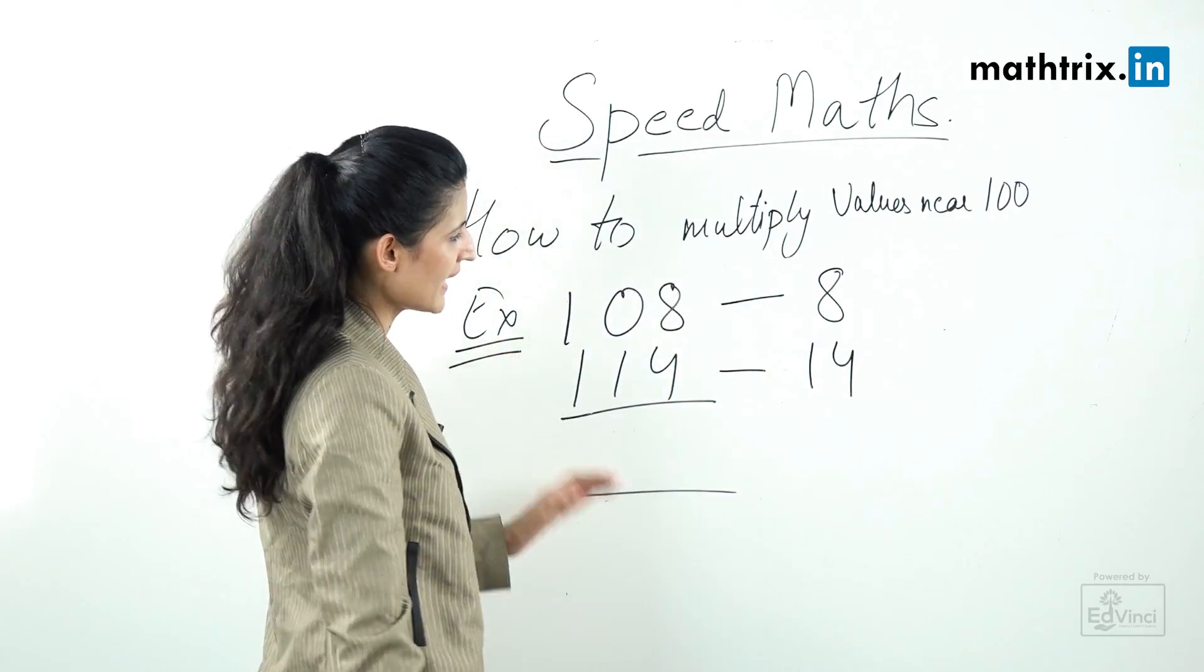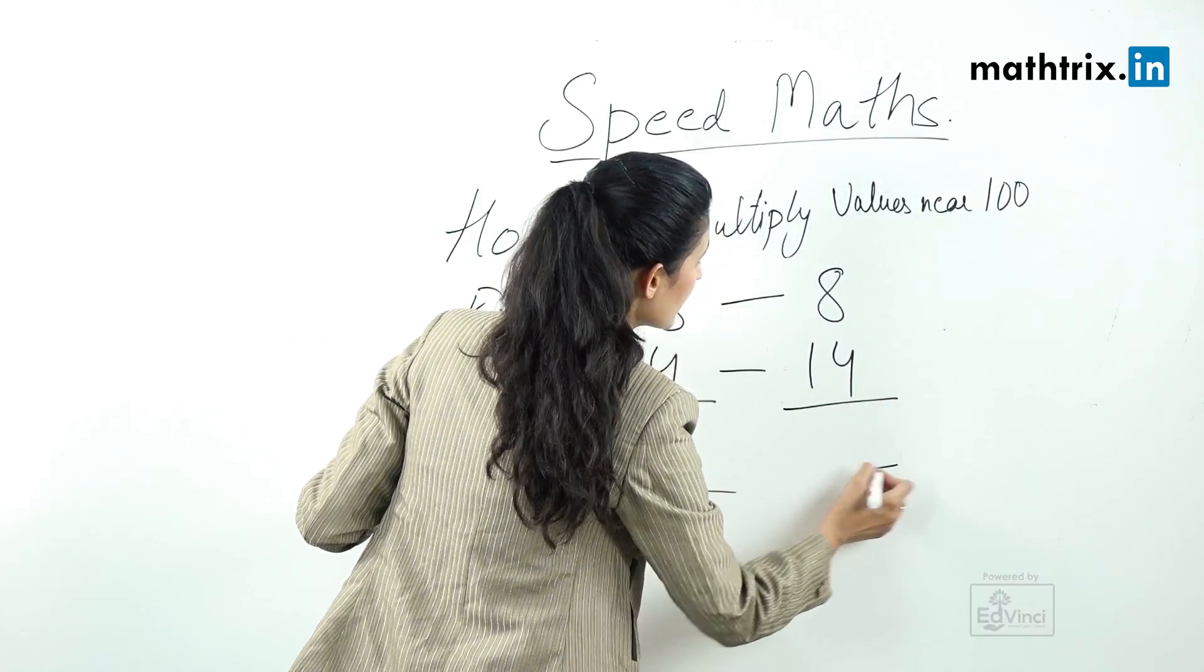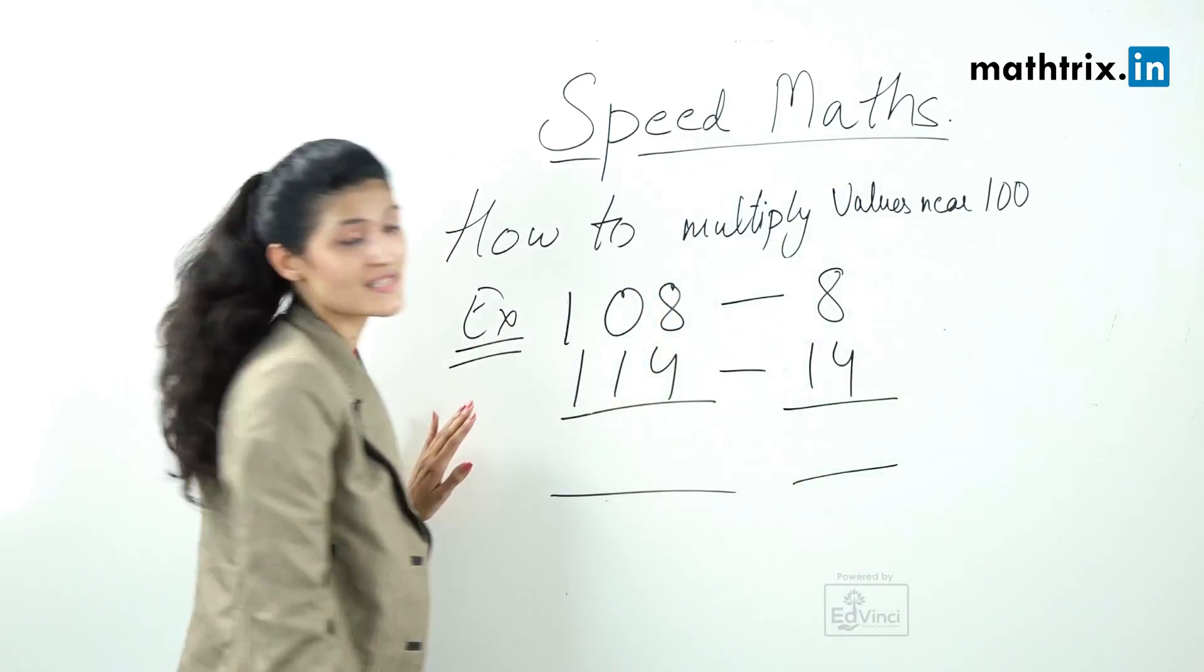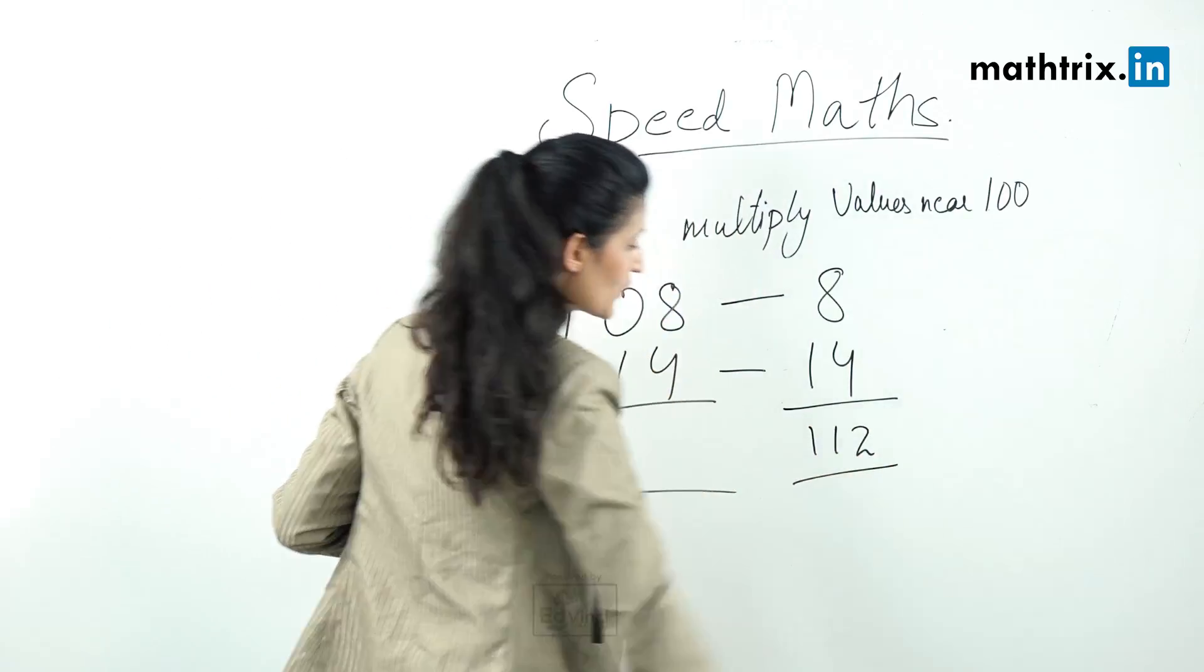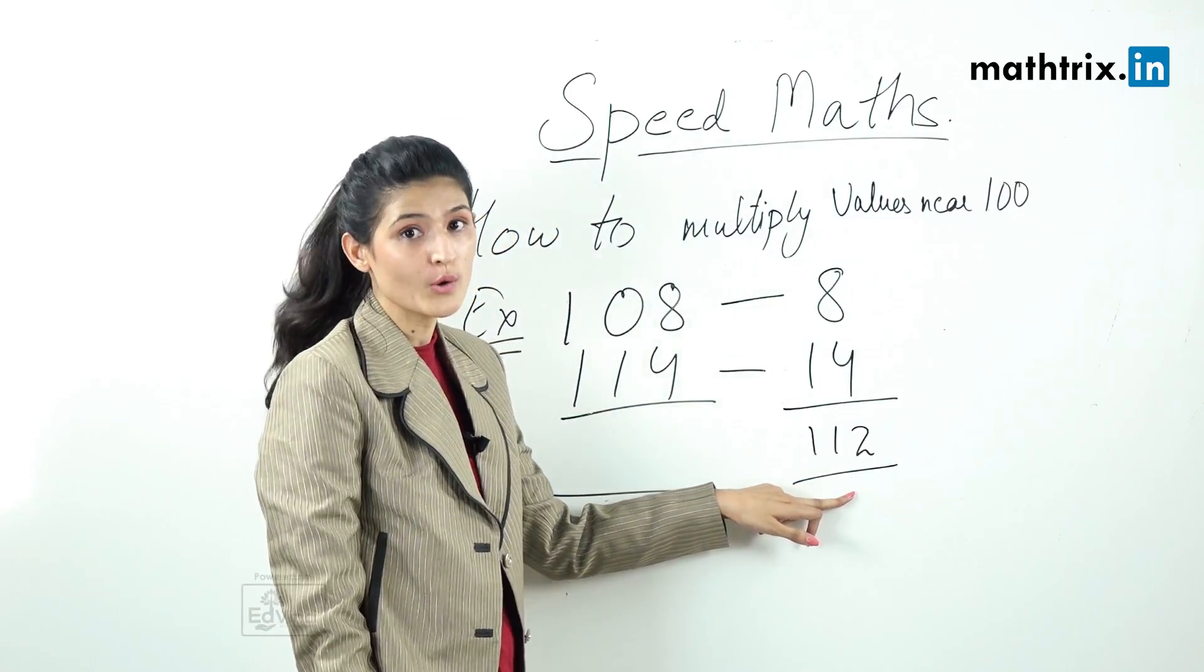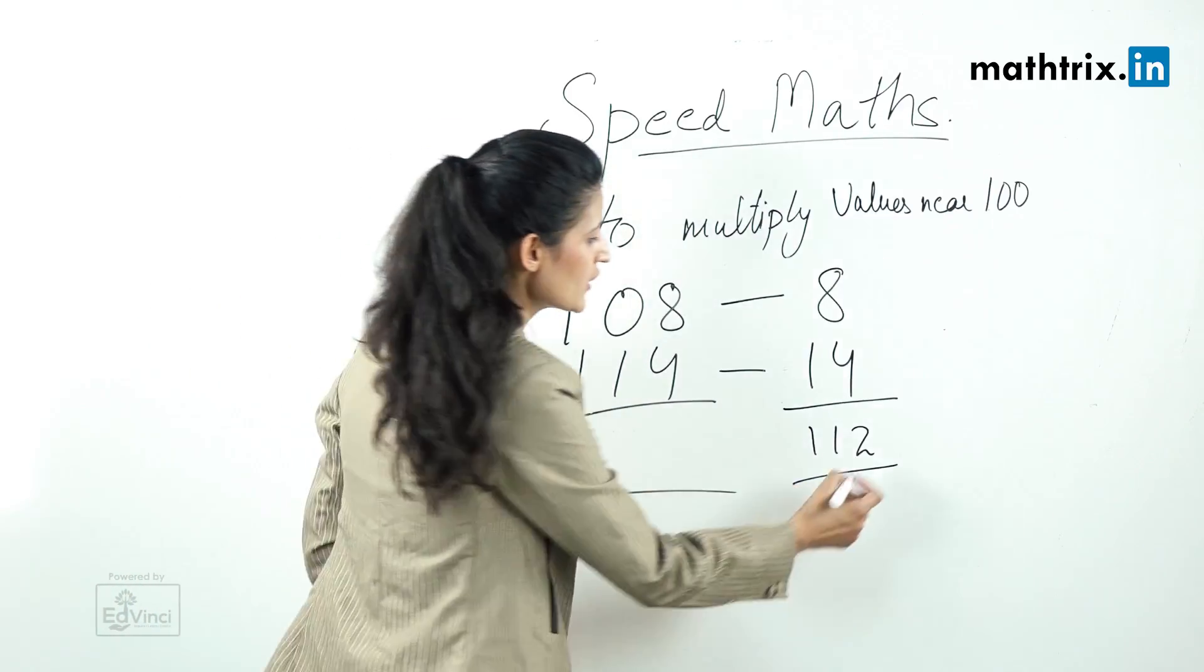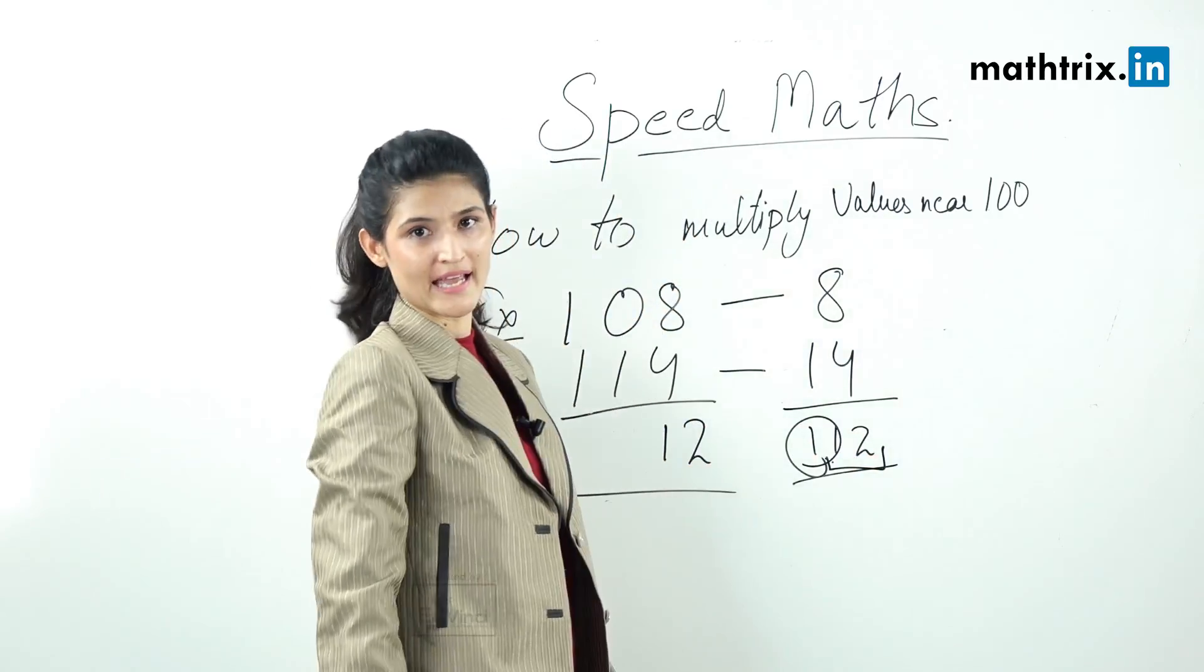Step number 3, multiply the differences. When we are multiplying the differences, our answer is 112. Again, I want to stress here, the multiplication of differences always gives us the last 2 digits. So these 2 digits we put here and this 1 we're gonna carry.